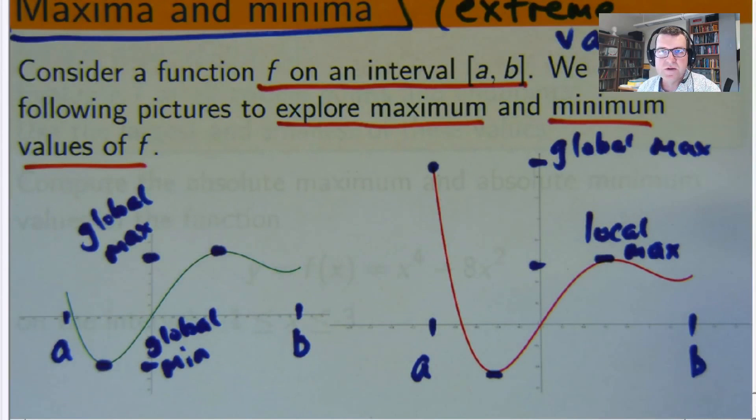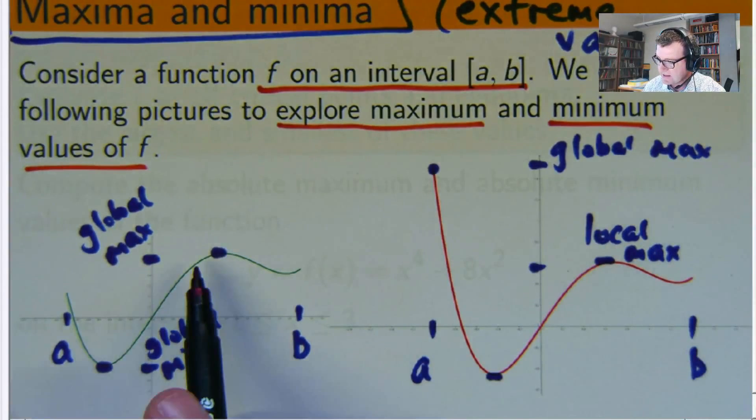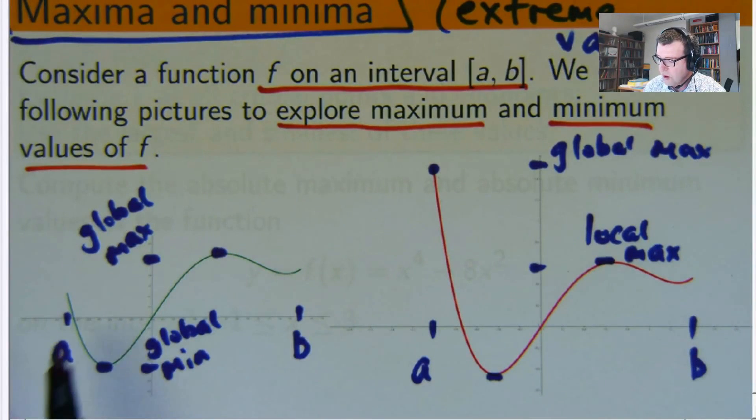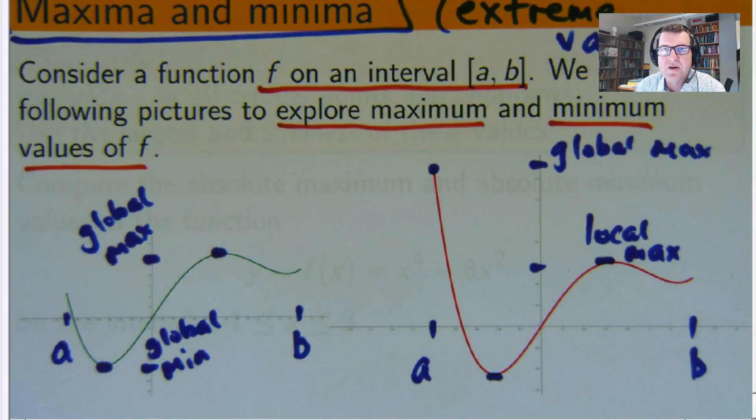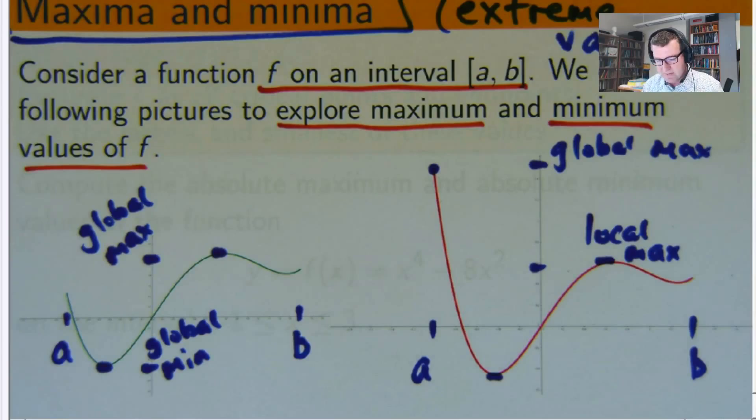Because we're going to deal with nice continuous functions in this course, the extreme values will occur either at these peaks and valleys or at the endpoints. Mathematically, it means that the extreme values occur either at the critical points, where the derivative is zero, or at the endpoints.